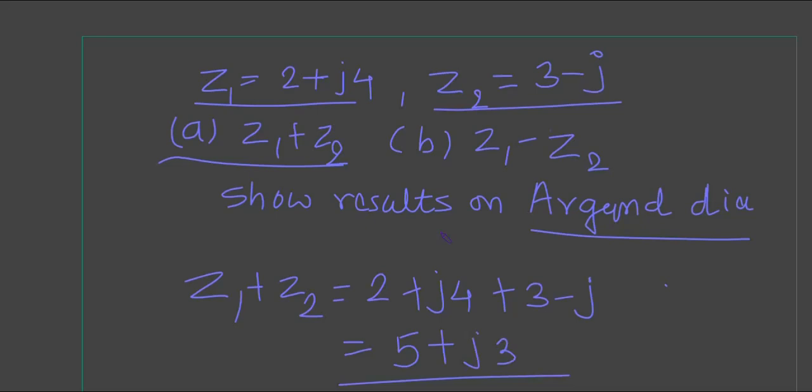What is the Argand diagram? It is a plane in which you have to plot the real axis and imaginary axis. So this is the real axis and this one is the imaginary axis.